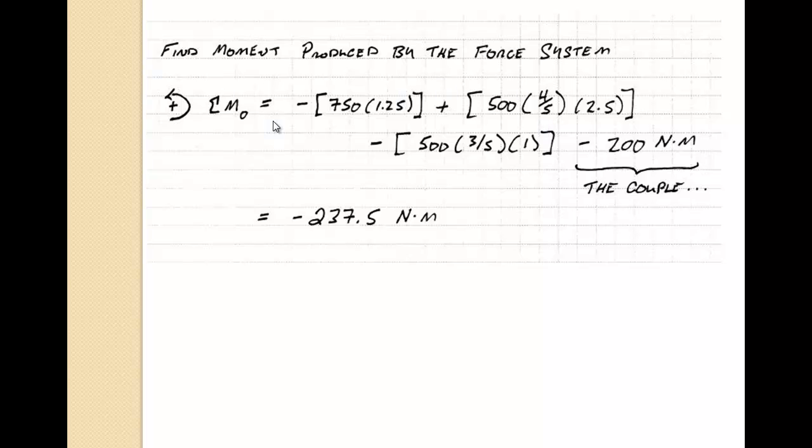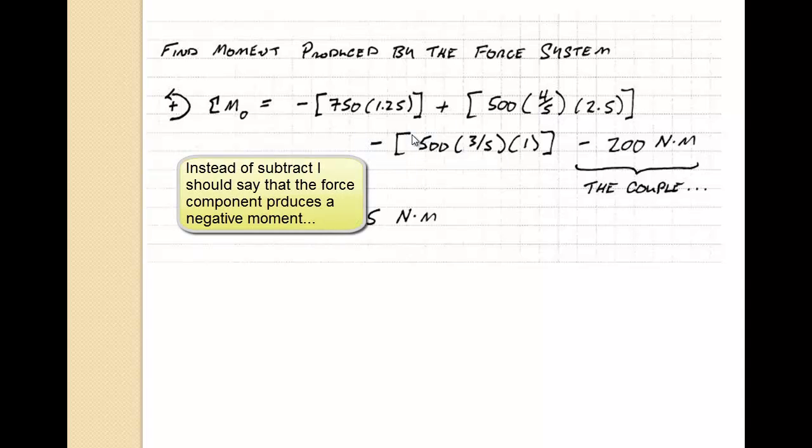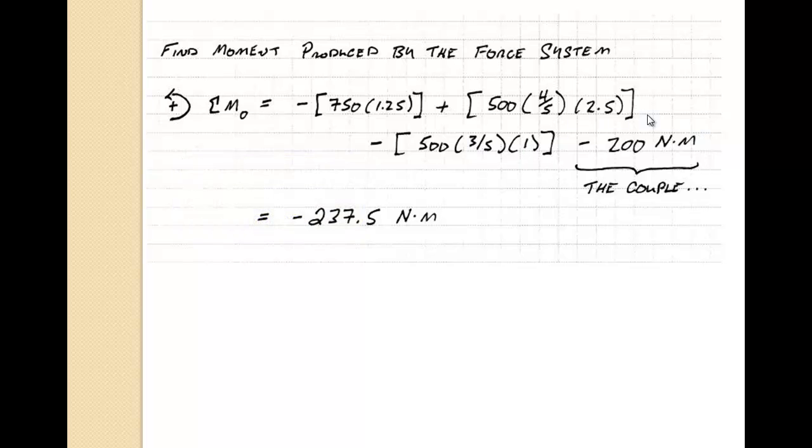So here we have the negative 750 times its moment arm of 1.25. And then to this, we're going to add the positive moment from the y component of the 500 newton force. That's acting at a distance of 2.5 meters. And finally, we have to subtract off the x component of the 500 newton force at its moment arm of 1 meter. And to that moment, we have to add in the 200 newton meter couple. And this produces a total moment around O to be minus 237.5 newton meters.